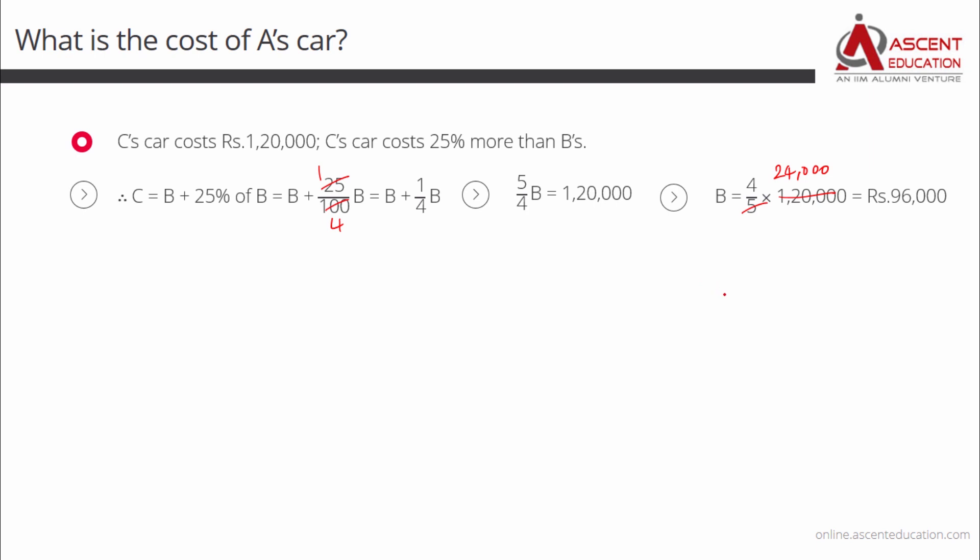So what we have done? We have found out the cost of B's car. This is not the end of the road. What we need to actually find out is what is the cost of A's car. Let us pick the second part of the information which basically compares the cost of B's car with that of A's car.